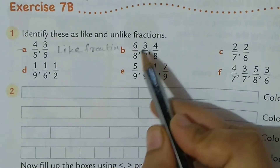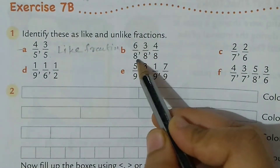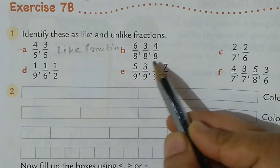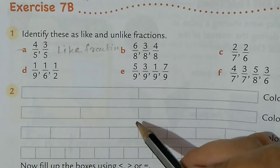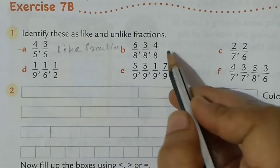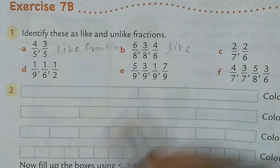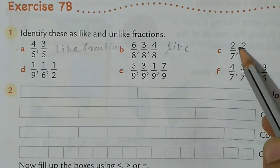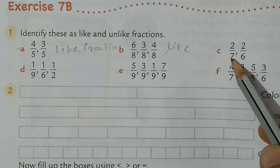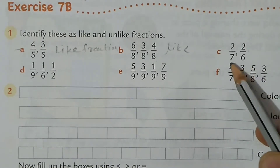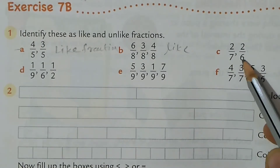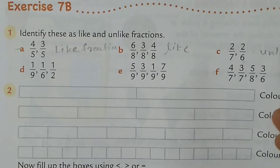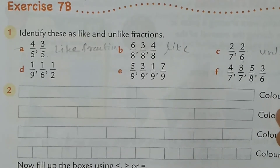Next, b: 6 upon 8, 3 upon 8, 4 upon 8 — their denominators are the same, so this one is also a like fraction. C: 2 upon 7, 2 upon 6 — their denominators are different, so right here, unlike fraction.